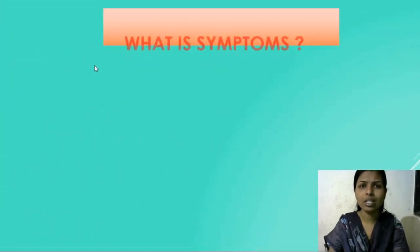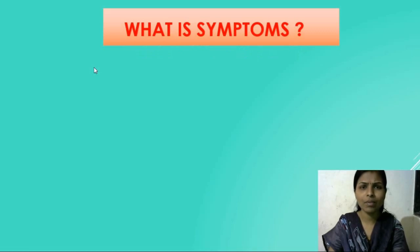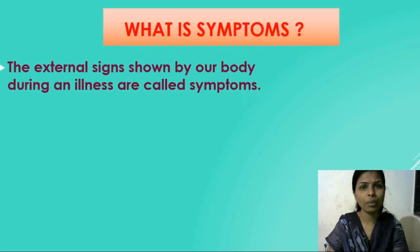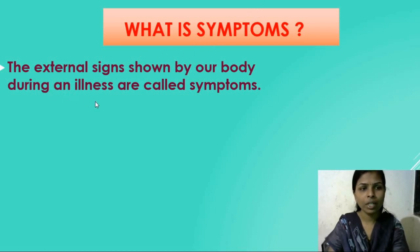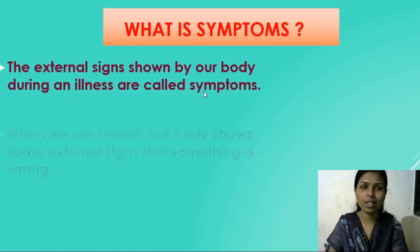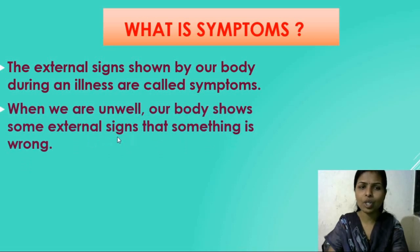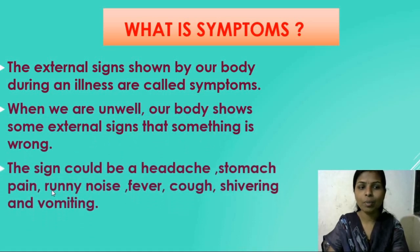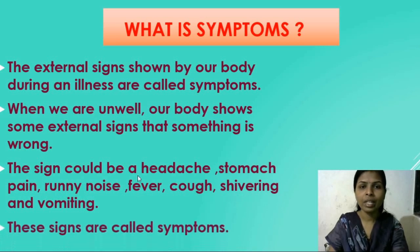Let's see what Symptoms means — what are the different signs of a Disease. How we can identify that we are suffering from some Disease — that is called Symptoms. Symptoms are the external signs shown by our body during an illness. When we are unwell, our body shows some external signs that something is wrong. Those signs could be a runny nose, fever, cough, stomach pain, headache, shivering, and vomiting. These are some external signs and all these signs are called Symptoms.